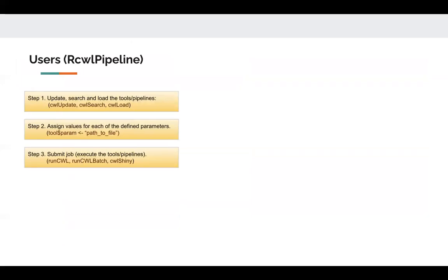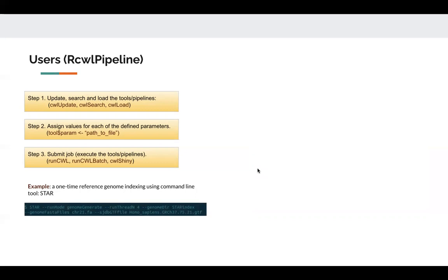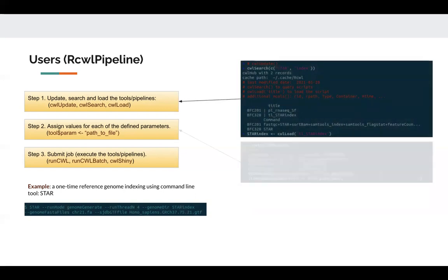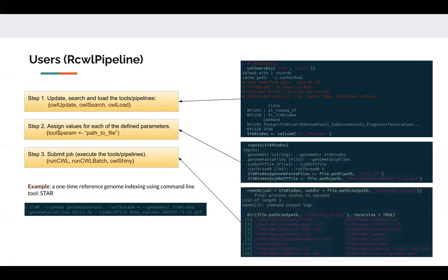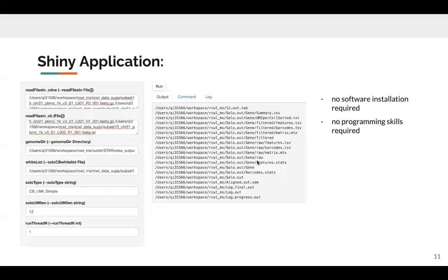As mentioned, we have a set of pre-built RCWL tools and pipelines, and we suggest users search for the specific tool or pipeline first. Here we use an example of one-time reference genome indexing using the command line tool STAR. The first step is to update, search, and load the tool pipeline. The second step is to assign values for each of the defined parameters. The third step is to submit the job and execute the tools and pipelines as a CWL pipeline. We also have a Shiny application available where users can click buttons to enter parameter values and click Run to submit the job, with output files listed in the interface — very user-friendly, requiring no software installation and very little programming skill.